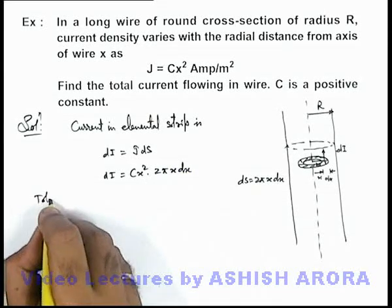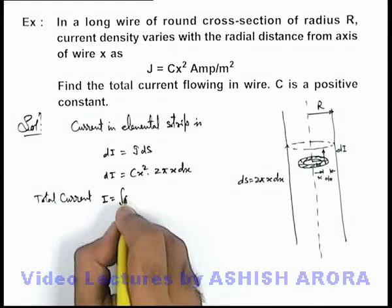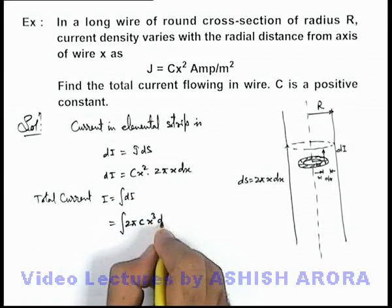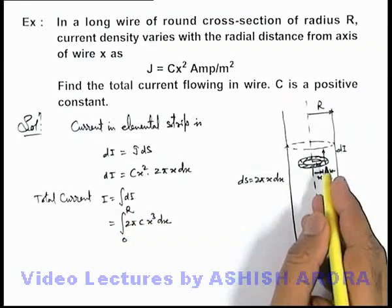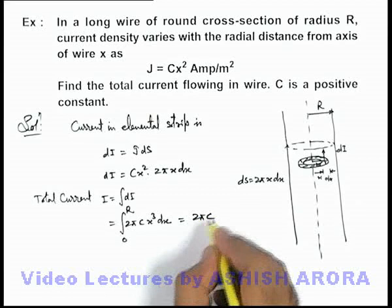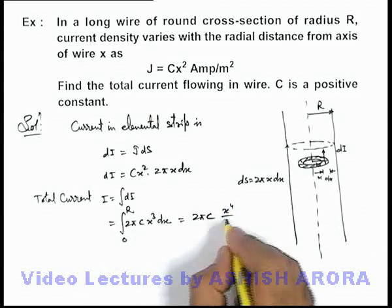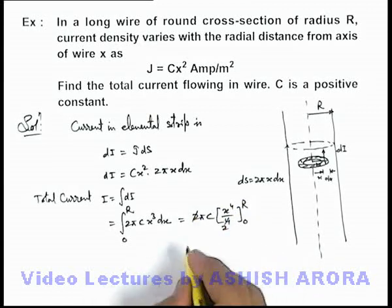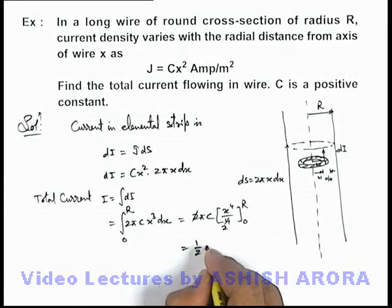Here we can calculate the total current I, given by the integration of dI. Integrating, it becomes 2πc ∫x³ dx, with limits from zero to r to cover the whole cross-section in which the current is flowing. On integrating, 2πc is constant, and the integration of x³ is x⁴/4. Applying limits from zero to r, the 2 gets cancelled out, giving (1/2)πc.